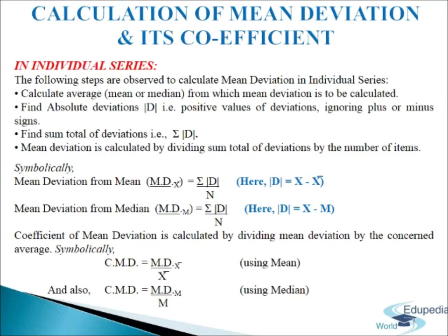Coefficient of mean deviation is calculated by dividing mean deviation by the concerned average. Symbolically: CMD = MD(mean) / x-bar, where MD is mean deviation and x-bar is the mean. Next, coefficient of mean deviation from median equals MDM divided by M, where MD is mean deviation and M is median. This is the formula for coefficient of mean deviation.